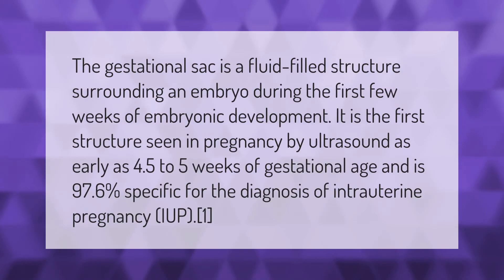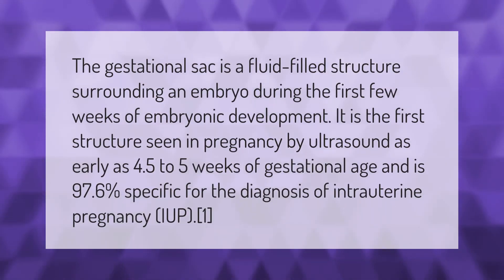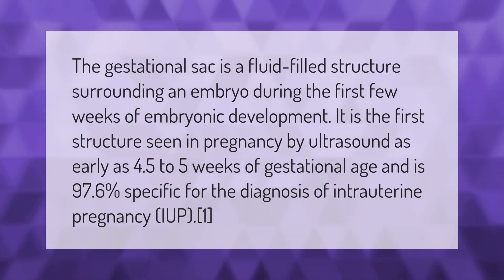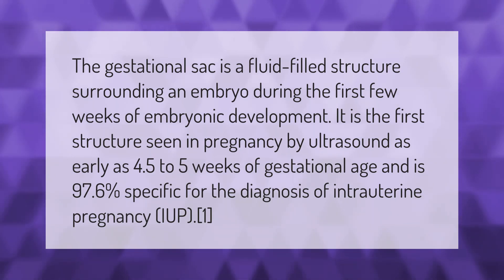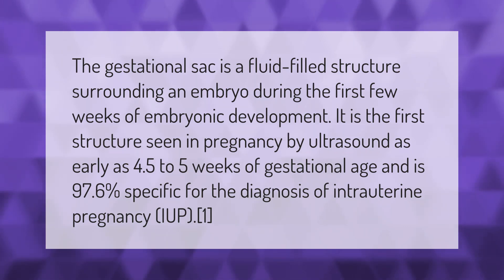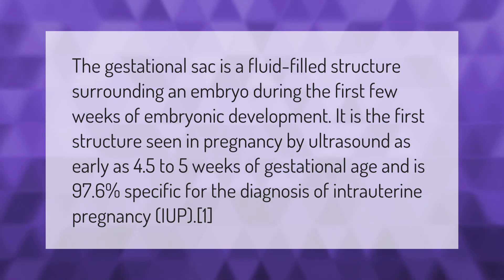The gestational sac is a fluid-filled structure surrounding an embryo during the first few weeks of embryonic development. It is the first structure seen in pregnancy by ultrasound, as early as 4.5 to 5 weeks of gestational age, and is 97.6% specific for the diagnosis of intrauterine pregnancy (IUP).